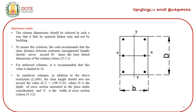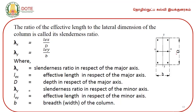To illustrate: for a column cross-section with breadth b and depth d, the major axis is x-x and minor axis is y-y. For unbraced columns, the unsupported length should not exceed 30 times the least dimension. For cantilever columns, in addition to the above restriction, the clear height should also not exceed 100b²/d, where d is the depth of the cross-section and b is the width.